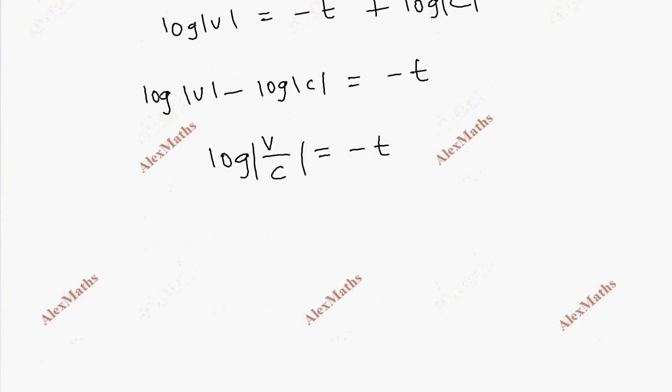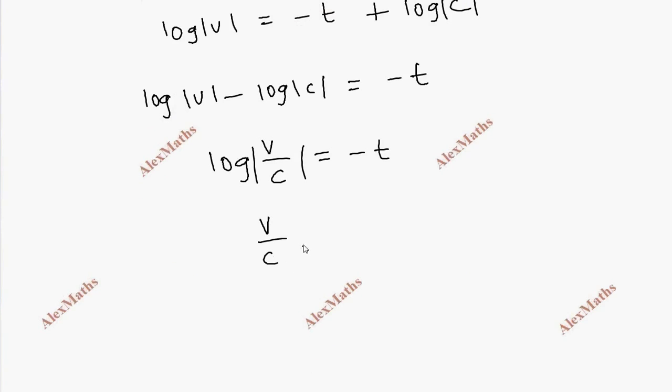Log of v by c equals e to the power minus t. So v equals c e to the power minus t. That is the general solution.